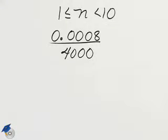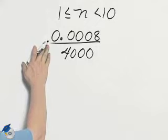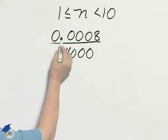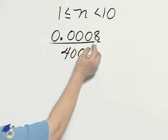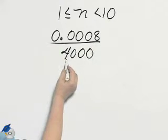Scientific notation can even help us solve a problem like this. If I have 0.0008 divided by 4,000,